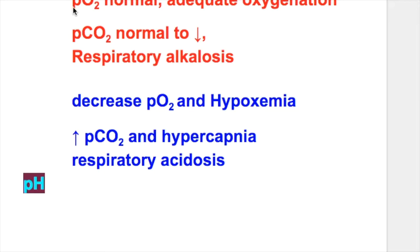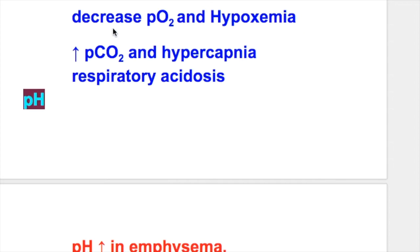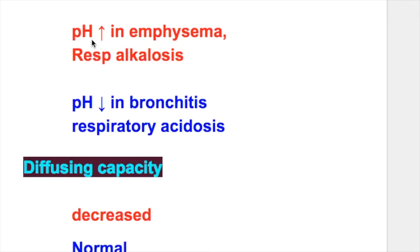ABG: In emphysema, arterial oxygen is normal with adequate oxygenation, and carbon dioxide is normal to decreased, leading to respiratory alkalosis. In chronic bronchitis, there is decreased arterial oxygen with hypoxemia, and carbon dioxide is increased with hypercapnia, leading to respiratory acidosis. pH in emphysema is increased — respiratory alkalosis — whereas pH in chronic bronchitis is decreased due to respiratory acidosis.